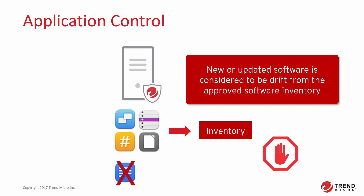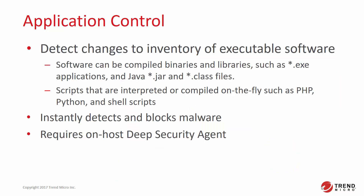If any drift from the approved inventory is detected, Application Control will log the change and it will appear on the Actions tab. Unlike the Integrity Monitoring Protection Module, which monitors any type of file, Application Control only looks for software files when examining the initial installation and monitoring for changes.